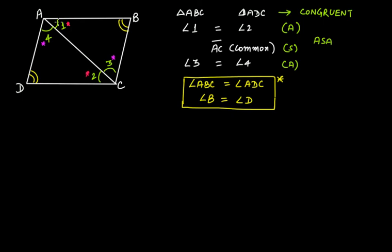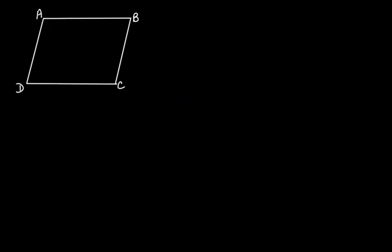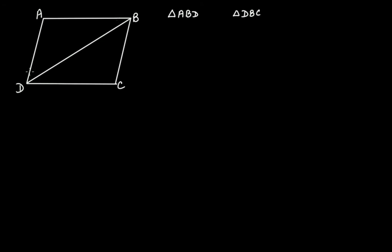Now let's see for angle A and angle C. For this we have to draw the diagonal connecting the two opposite vertices B and D. Then we get two triangles: triangle ABD and triangle DBC. Let this be angle 1, this be 2, this be 3, and this be 4.